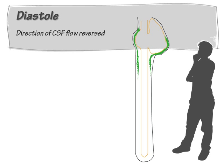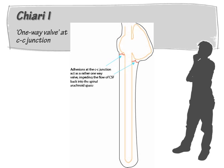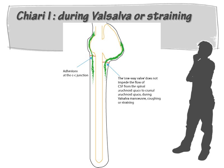During diastole, the CSF flows from the spinal arachnoid space into the cranial subarachnoid space. According to Bernard Williams, in patients with Chiari 1 malformation, there are adhesions in the arachnoid space at the cranio-cervical junction, or there is early tonsillar herniation that acts like a one-way valve. It allows CSF to flow from the spinal subarachnoid space to the cranial subarachnoid space across the cranio-cervical junction. However, it impedes the flow of CSF from the cranial subarachnoid space into the spinal subarachnoid space.